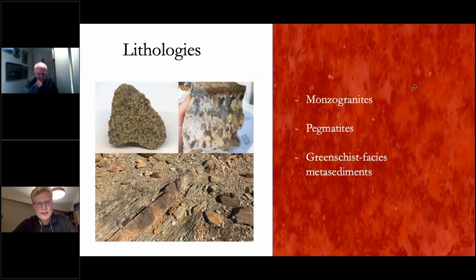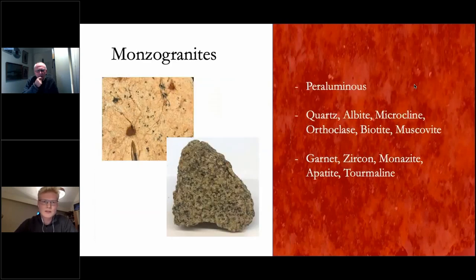There are three main lithologies you need to be aware of to understand this project. There are the monzogranites and pegmatites, which in turn intrude these greenschist facies metasediments. The monzogranites are peraluminous, with a major mineralogy of quartz, albite, microcline, orthoclase, biotite and muscovite, with accessory minerals of garnet, zircon, monazite, apatite and tourmaline. The zircon and monazite, as well as apatite, are particularly important. I'll come back to this later.